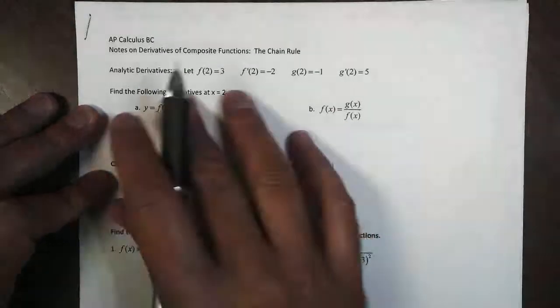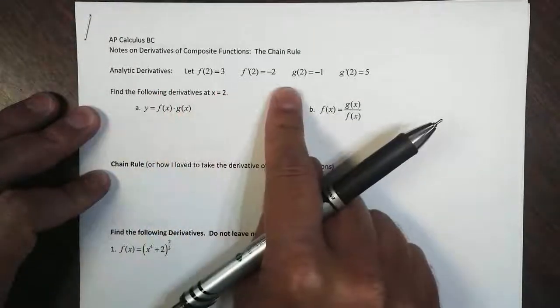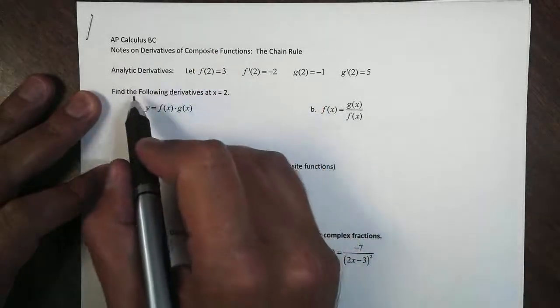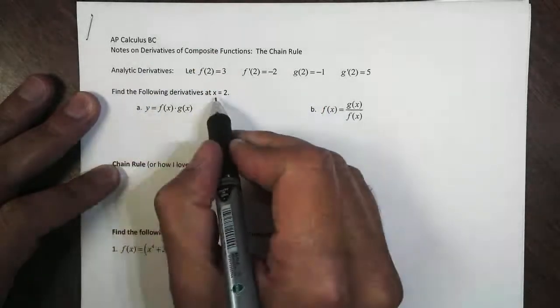Let's take a look at some more analytic derivatives. We talked about these yesterday. They go with the product and quotient rule. The following says, find the derivative at x equals 2.